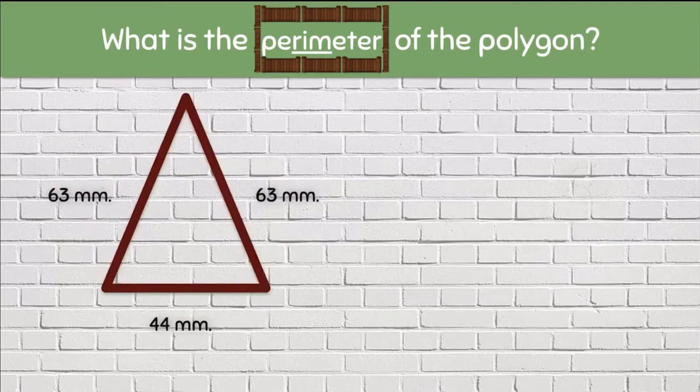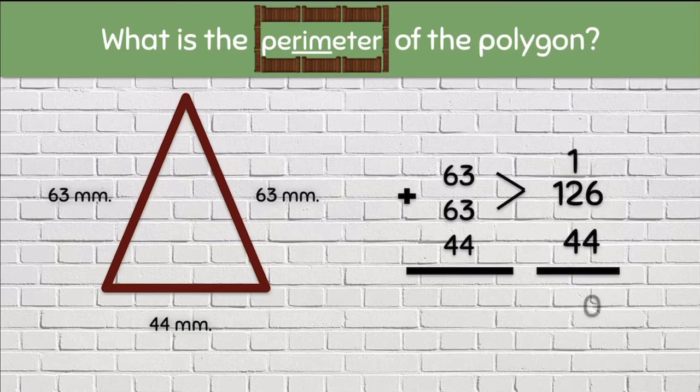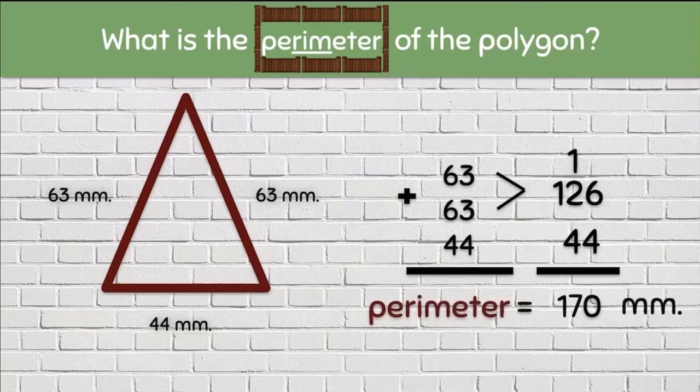Let's add up all three sides. We have 63 plus 63 plus 44. We know that 63 plus 63 makes 126 and then we still have the 44. Let's add, we carry the one, bring down the zero. One plus two plus four is seven and we still have the one. That means that the perimeter of this polygon is 170 millimeters.